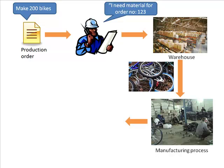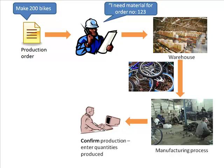The manufacturing process takes place, and once complete, you want to tell the system you're done. For example, you started making 200 bikes but were able to make only 198 — two bikes were rejected by quality. Information about how much time was taken also gets recorded. So there's the whole process of confirming the production process. Confirmation is the step which lets the system know what happened, because the production process is happening out in the real world, outside of the SAP system. You take that information and put it into SAP for the system to know what actually happened.